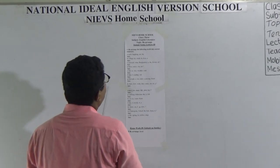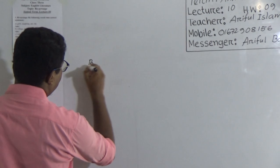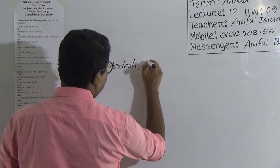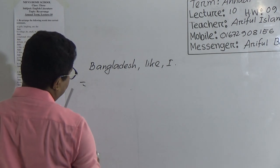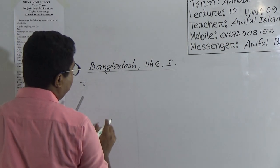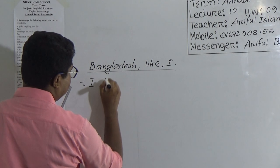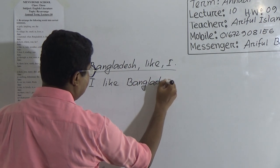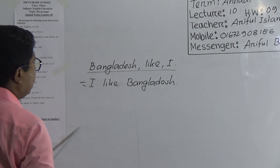Do you know what rearranging is? Suppose I am writing a sentence: 'Bangladesh, like, I.' This is not a complete sentence — it does not express the full meaning. There are jumble words in the sentence. If I make it a correct sentence, we write the subject first: 'I', then verb: 'I like Bangladesh.' So, this is called rearranging. You have to rearrange the words with complete meaning, complete sense.